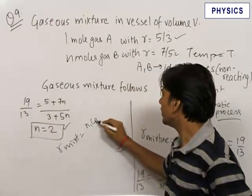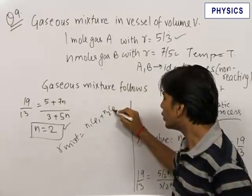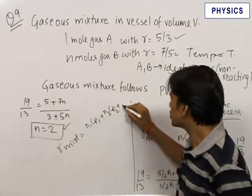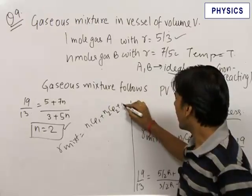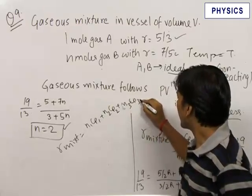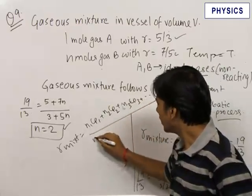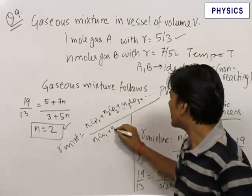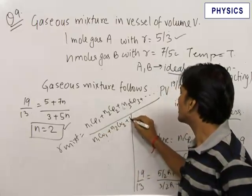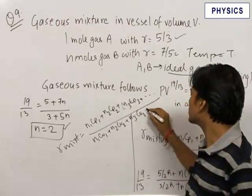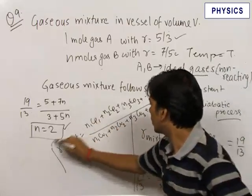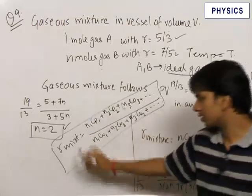n1 Cp1 plus n2 Cp2. This is not only true for mixture of 2 gases, this is true for any number of gases: n3 Cp3 and so on upon n1 Cv1 plus n2 Cv2 plus n3 Cv3 and so on. So this is an important formula that you should remember.